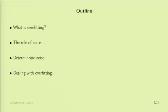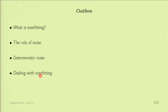The outline today: first, what is overfitting. Then we'll identify the main culprit, which is noise. We'll observe that noise covers more territory than we thought—there is another type called deterministic noise, which is a novel and important notion for overfitting. Then briefly I'll give a glimpse into the next two lectures on how to deal with overfitting, preparing us for regularization next time and validation the time after that.